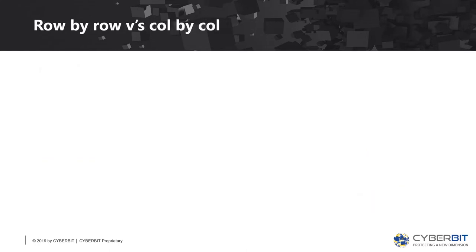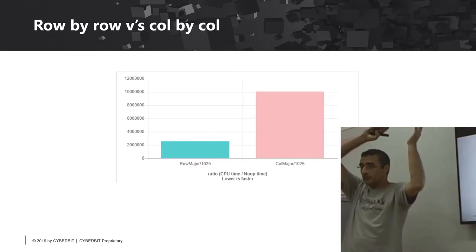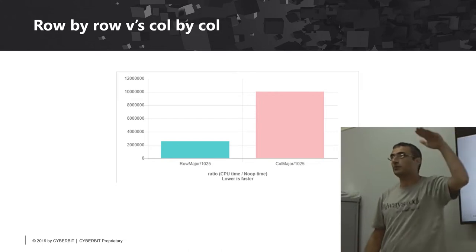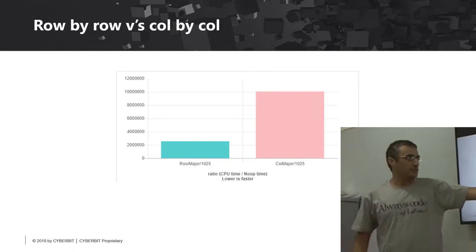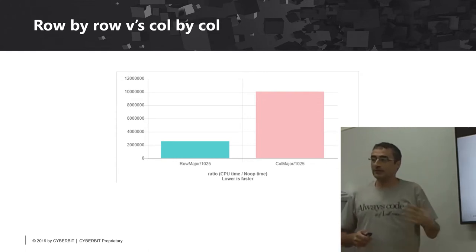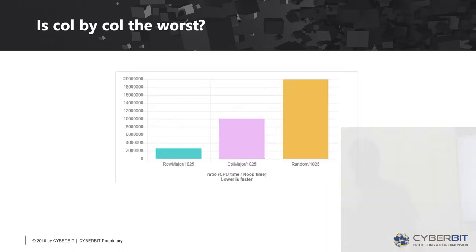Let's see how this affects us when we actually write software. If we have a big matrix and we want to scan it, scanning row by row is sequentially scanning memory so it's much faster than column by column. But the question is: is scanning column by column actually the slowest? The answer is no — if we scan the matrix randomly, it's about twice as slow.